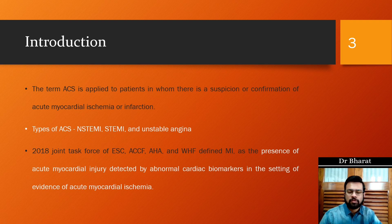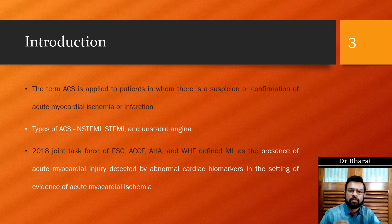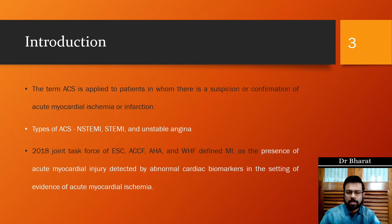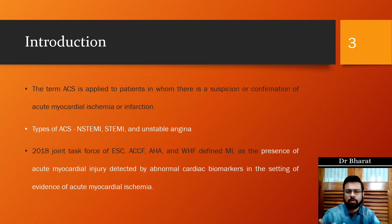The 2018 Joint Task Force comprising the American Heart Association, the European Society of Cardiology, American College of Cardiology Foundation, and the World Heart Foundation defined myocardial infarction as the presence of acute myocardial injury detected by an abnormal rise in cardiac biomarkers in the setting of acute myocardial ischemia. Basically, there should be ongoing ischemia causing myocardial injury and cell death, which in turn causes a rise in cardiac biomarkers like CKMB and Troponin I and T.